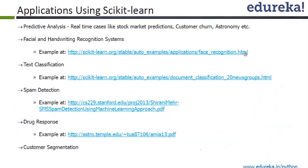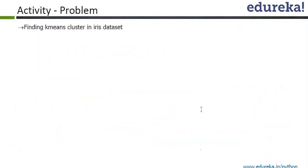Facial and handwritten recognition systems — you saw this example yesterday — can be done via scikit-learn. You have text classification, spam detection — you can do this via scikit-learn. You have drug response and customer segmentation. If you remember the house prediction problem, or whether to give credit to a particular customer — that's customer segmentation. That can also be done using scikit-learn.